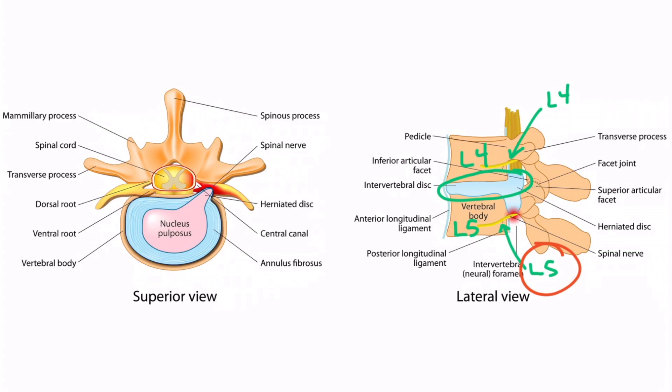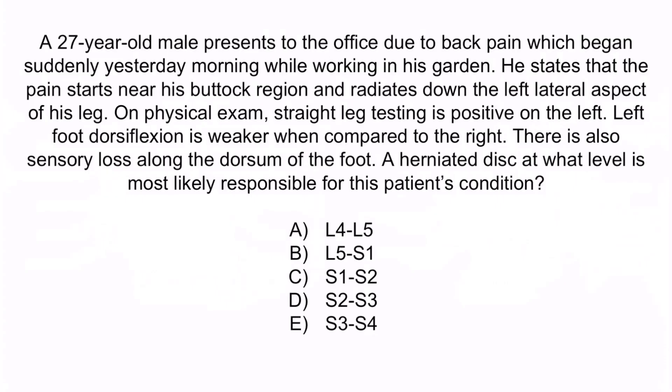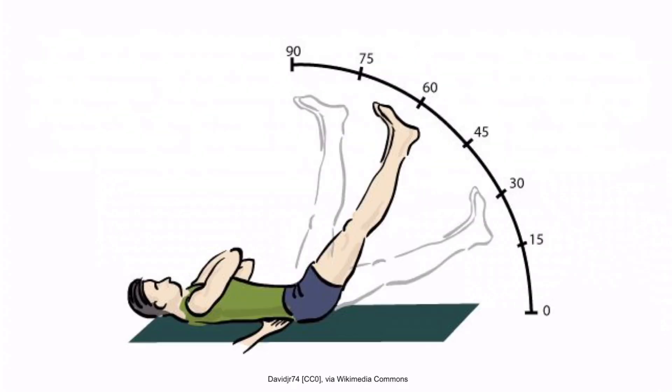You may have noticed in the question stem that this patient had a positive straight leg test. This image shows the straight leg test — a physical exam maneuver used to screen for lumbar radiculopathy. The examiner asks the patient to keep their leg straight and raises it up to 90 degrees. If the test is positive, the patient will experience radiating pain down past the knee. This patient's positive straight leg test makes lumbar radiculopathy more likely.